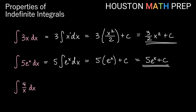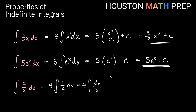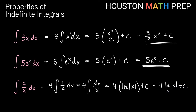Looking at the integral of 4 over x dx, we can read this as 4 times the integral of 1 over x dx. You might also see this written as 4 times the integral of dx over x — all three forms are the same integral. The antiderivative of 1 over x is ln of absolute value x, so we get 4 ln absolute value of x plus c.